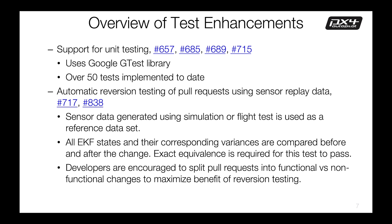We've added unit testing using the Google GTest library, with over 50 tests implemented to date, being developed and added with each pull request for new features. Also importantly, we added the ability to run automatic reversion testing using replayed sensor data. This is important because we have a significant number of pull requests involving refactoring or non-functional changes, and the reversion test allows us to check that these don't result in unintended changes in state estimation. We encourage developers to split pull requests into functional versus non-functional components to maximize use of this reversion testing facility.